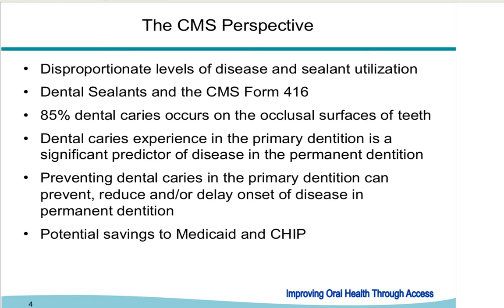In the Oral Health Initiative, the goals for preventive services include all dental sealants, whether on primary or permanent teeth. Line 12D reflects the second goal: a 10 percentage point increase in sealants on a permanent molar for children ages 6 to 9, enrolled for 90 or more continuous days. We've asked states to increase by 10 percentage points — not 10%. For example, if a state is at a 30% rate, it means going from 30 to 40, not 30 to 33.